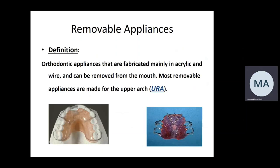By definition, removable appliances are those orthodontic appliances that are fabricated mainly from acrylic and wire — a piece of acrylic and a wire framework connected together. They can be removed from the mouth by the clinician and by the patient. Most removable appliances are made for the upper arch, which is why we call them upper removable appliances, abbreviated as URA.